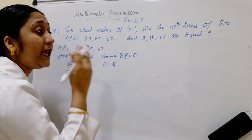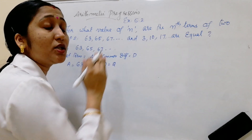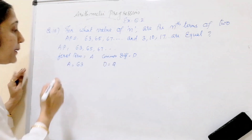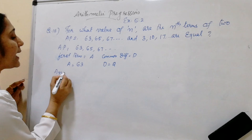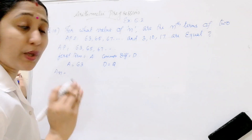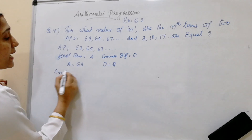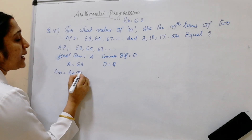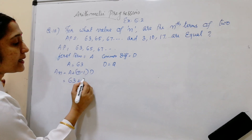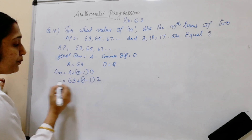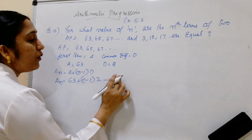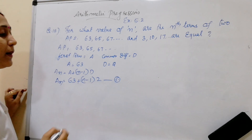The condition is that any one of the terms is equal in these two arithmetic progressions. That means we have to find the nth term. The nth term formula is A_N = A + (N−1) × D. Substituting the values: A_N = 63 + (N−1) × 2. This is equation number 1.